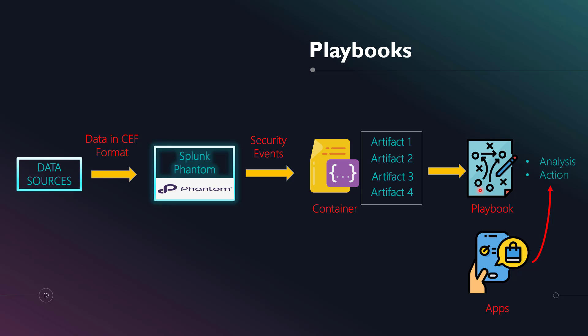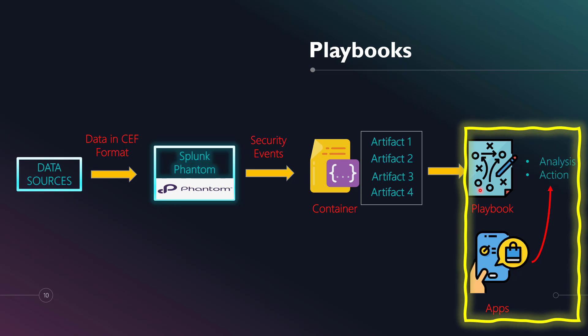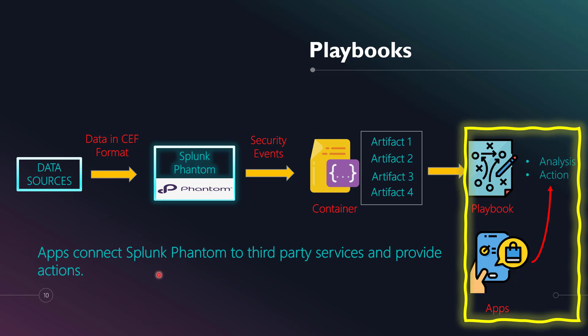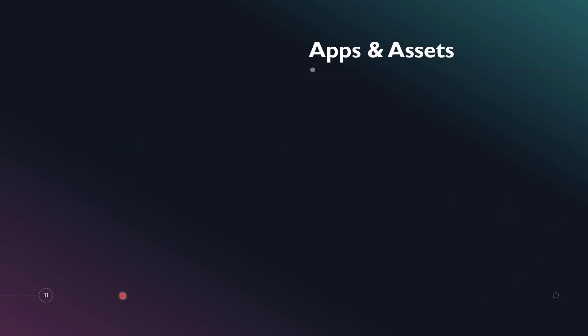Playbooks and apps work hand in hand: apps provide actions that playbooks can call and use. The app connects Splunk Phantom to third-party services. For example, to delete or move an email, you can use the Office 365 app, which exposes many actions that your playbook can call directly.